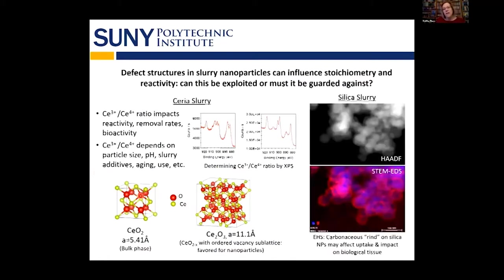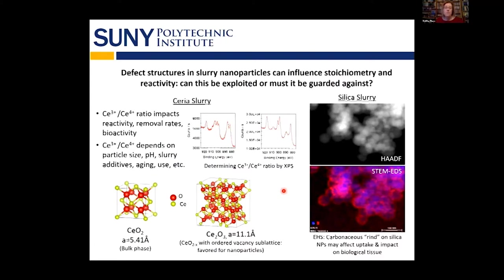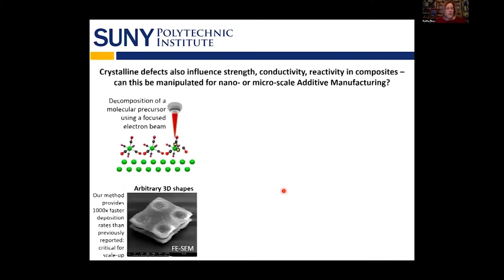On the right, you see another kind of ceramic nanoparticle made out of silicon oxide. The top picture is the electron microscope image showing clusters of little spherical particles. The lower image is mapped by elemental distribution, showing a silicon oxide core surrounded by a carbonaceous matrix that might affect the uptake and impact on biological tissues for worker health. Sometimes we can manipulate those defects; sometimes we have to engineer around them. I'm also looking at some other composites.